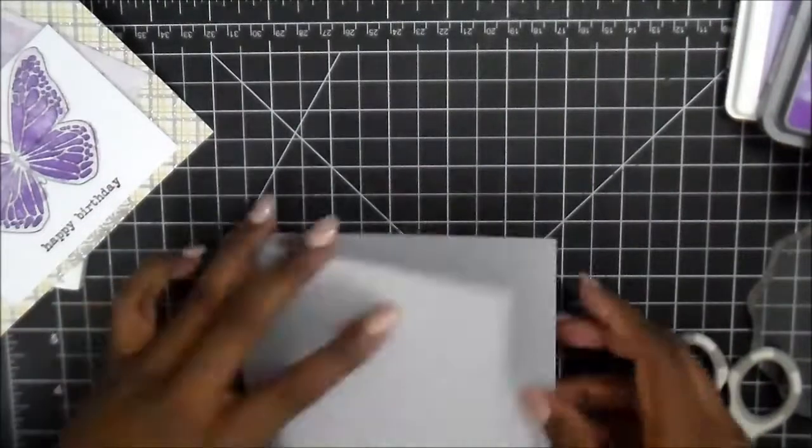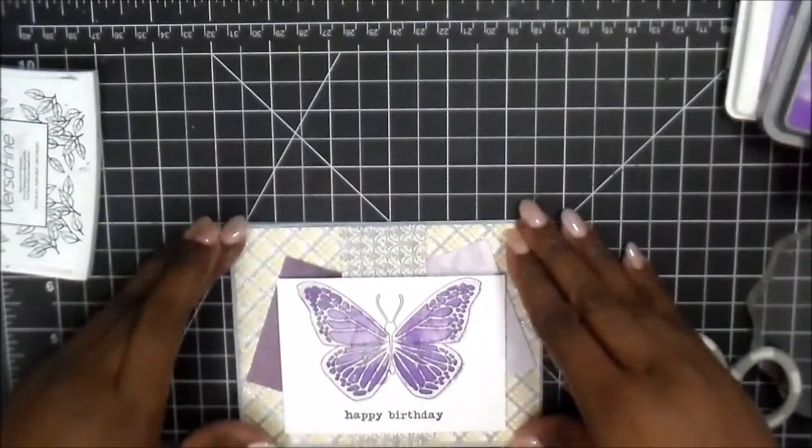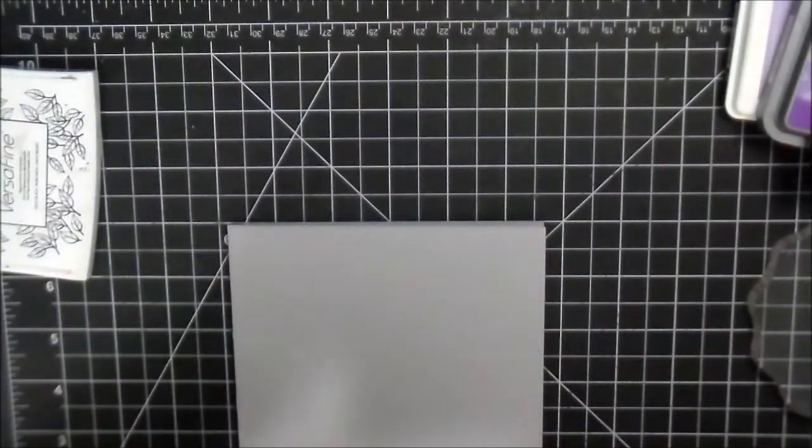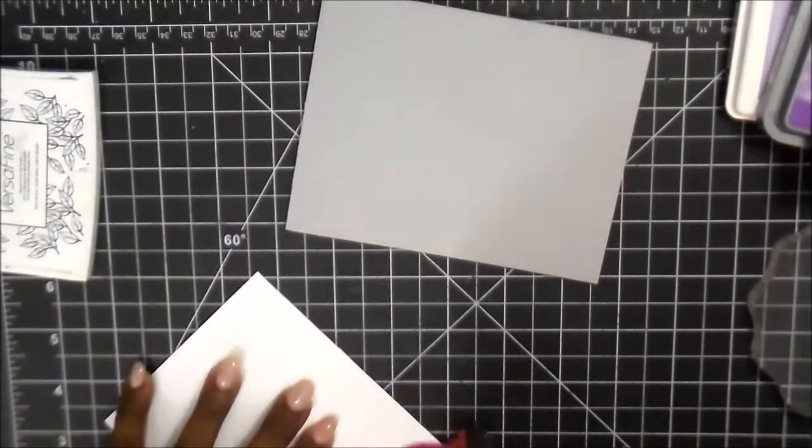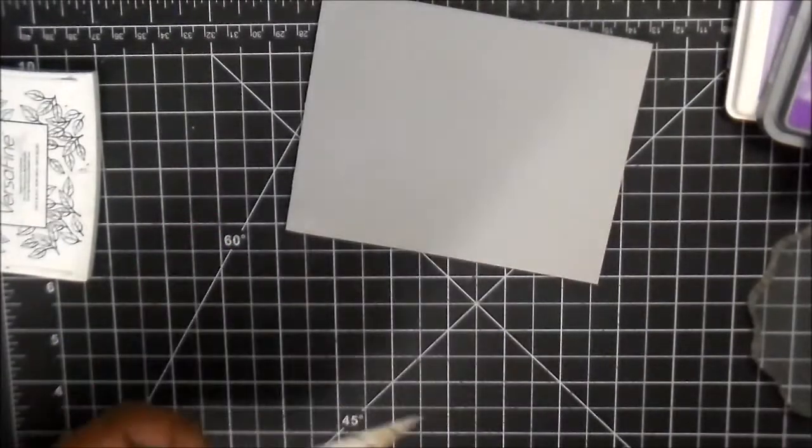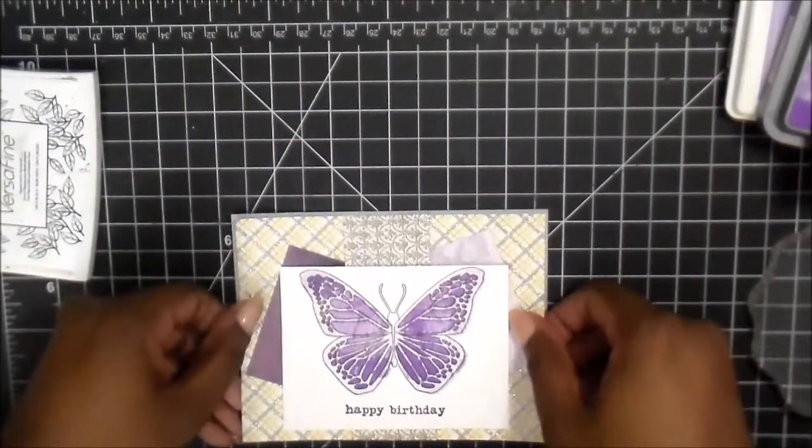Alright, so now, we're just going to crease our A2 size card. It's going to be a side open. And, we're just going to, once again, attach our main focal piece. And, we're just going to attach it there.